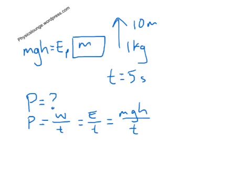That means, put the numbers in, the total power, the rate of energy conversion, it's going to be 1 kilogram times by force due to gravity, gravitational field strength, that's 10 newtons per kilogram, times the height you move it through is 10 meters, and the time it took was 5 seconds.